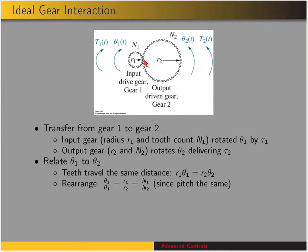We want to relate the input and output terms — specifically input displacement to output displacement. The teeth travel the same distance, so the teeth on gear 2 can't move any faster than the teeth on gear 1. That means R1 times theta 1 equals R2 times theta 2. Rearranging gives the gear ratio: the ratio of output to input displacement equals the ratio of input radius to output radius. Since the gears have the same pitch, the number of teeth is proportional to radius, so we can substitute N1 and N2.